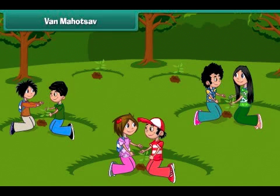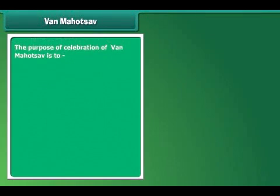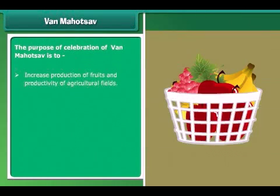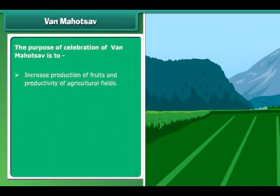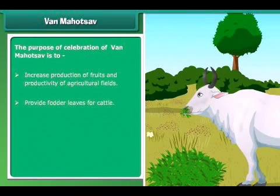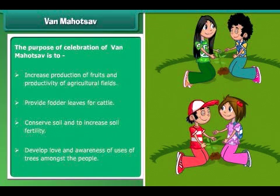Now let's know about Van Mahotsav. Van Mahotsav is a tree planting festival celebrated in the month of July every year. We celebrate Van Mahotsav to increase production of fruits and productivity of agricultural fields, provide fodder and leaves for cattle, conserve soil and increase the fertility of the soil, and generate love and awareness of the uses of trees among the people.